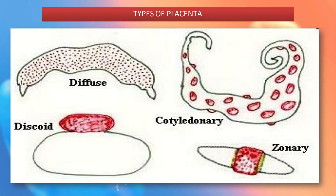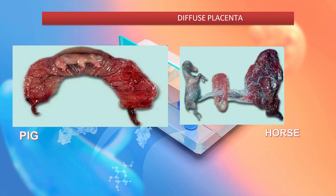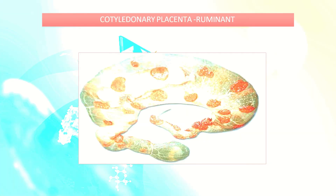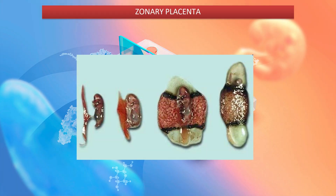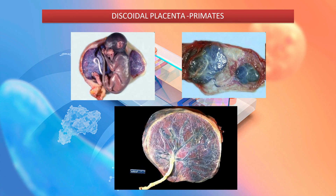There are different types of placenta: diffuse type, discoid type, cotyledonary type, and zonary type. The diffuse placenta is usually found in pigs and horses. Cotyledonary placenta is found in ruminants. Zonary placenta is found in dogs and cats. Discoidal placenta is found in primates.